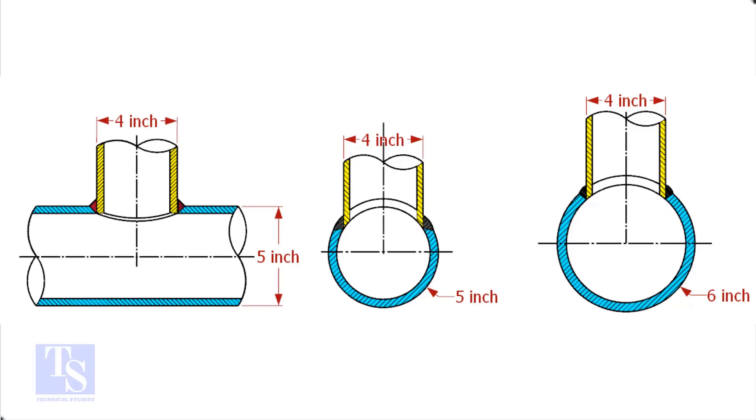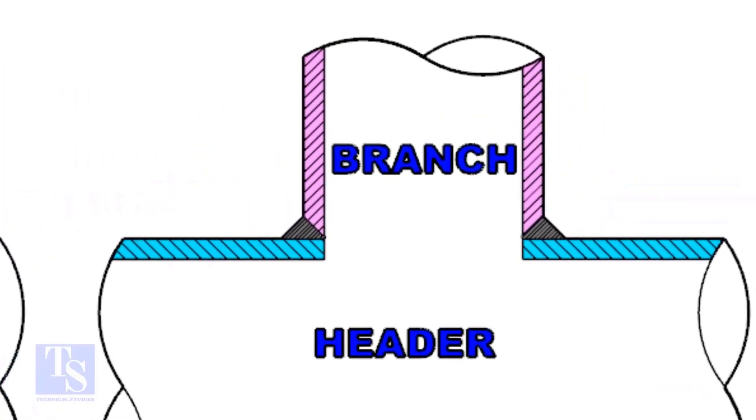Watch the section side view carefully. Check the stub-on view. The branch pipe sits on the header. The cut-back cutting of the branch pipe is done and the bevel also is prepared.